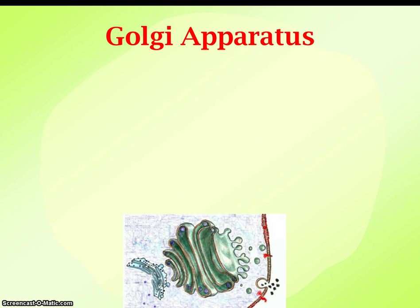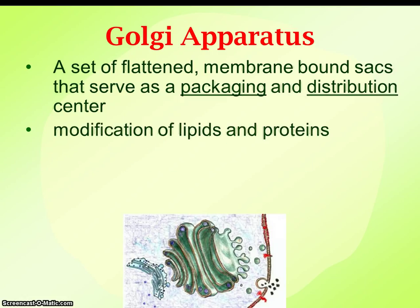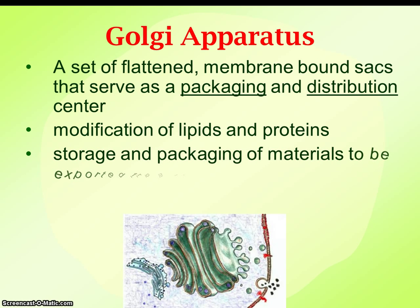The Golgi apparatus, or Golgi body — if the ER is for transportation, then the Golgi is going to be the packaging and distribution center. The Golgi looks like flattened, almost pancake-shaped sacks of membranes, and their big purpose is packaging and distribution. If there are large waste particles that need to be removed from the cell, the Golgi takes care of it. If there are things too large to pass through protein channels, the Golgi is going to be involved in packaging them to move in or out of the cell.